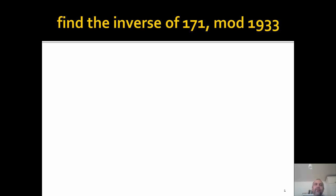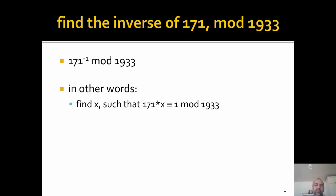The specific example that we will look at is: find the inverse of 171 modulo 1933. Another way to write that is 171 to the power minus 1. What we have to do in order to find the inverse is to find some value x such that if we multiply 171 with x we get 1. That is the definition of inverse, and x is the value that we are looking for.